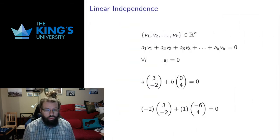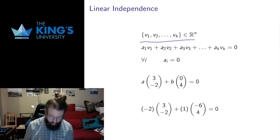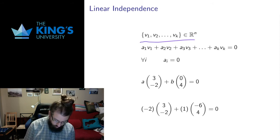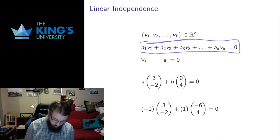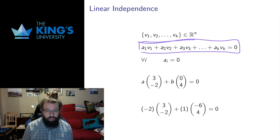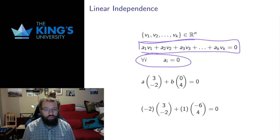Another really important definition is the definition of linear independence. Say I have some vectors in Rn. These vectors are called linearly independent — and this is a bit of a strange technical definition, so I'm going to go through it slowly. They're called linearly independent if the equation — some constant times the first plus some constant times the second plus some constant times the third, and so forth — if that equals zero, has only the solution that all the constants have to be zero.